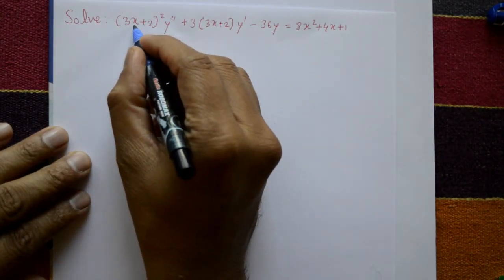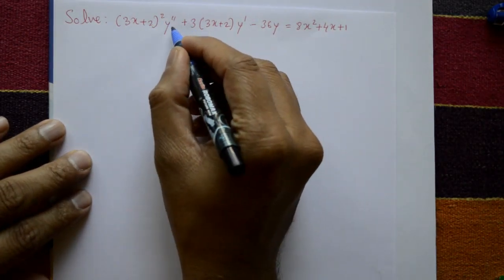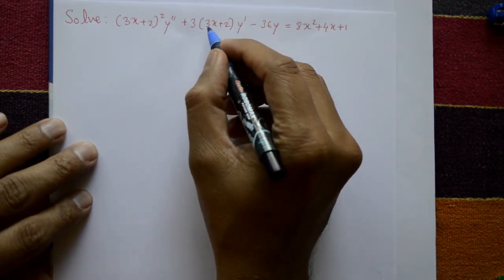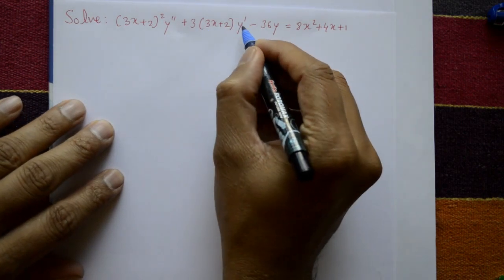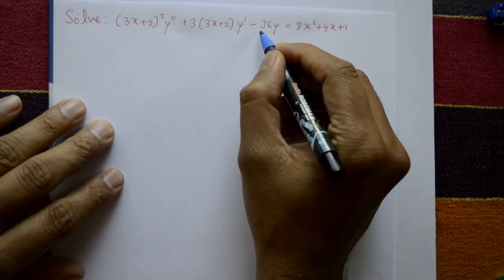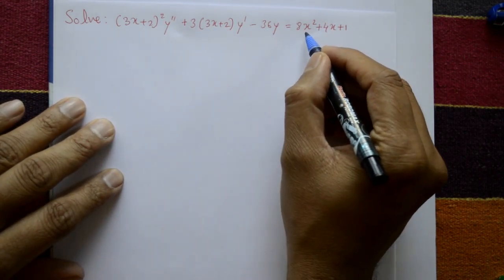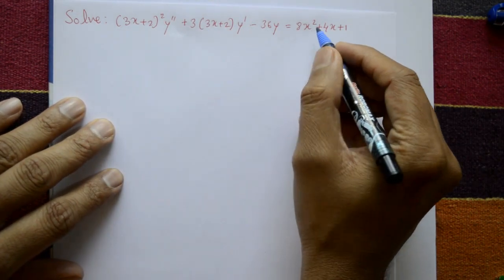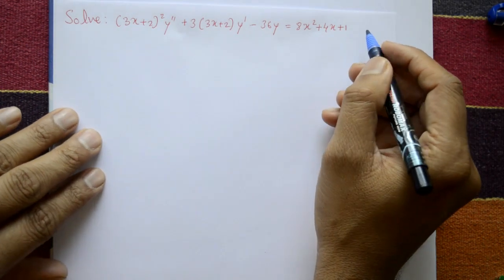Solve (3x + 2)² y'' + 3(3x + 2)y' - 36y = 8x² + 4x + 1.